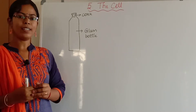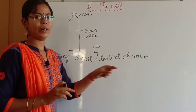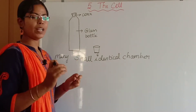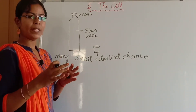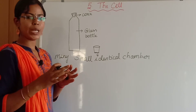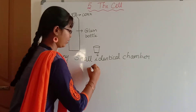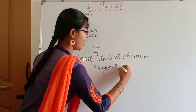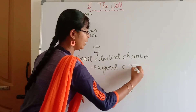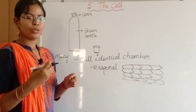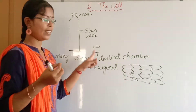So what did he see? He saw many small identical chambers. These chambers were like tiny little rooms. The shape was hexagonal — a hexagonal shape. This is what he observed from the cork piece under the microscope.